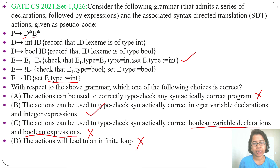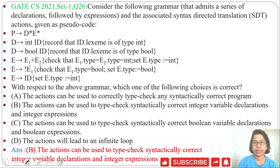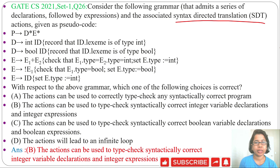So the answer is option B: the action can be used to type-check syntactically correct integer variable declarations and integer expressions. For solving this question, you should have knowledge about SDT. I already discussed SDT with examples — just go through my lecture and you can easily solve this question. If this lecture was helpful, please like and subscribe. Thank you.